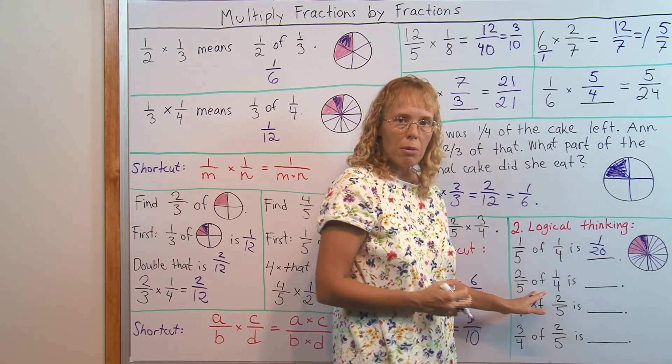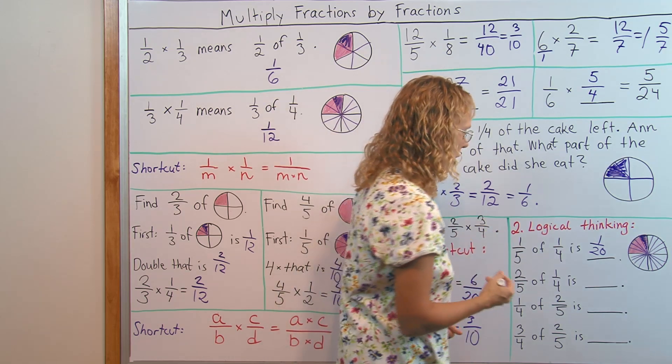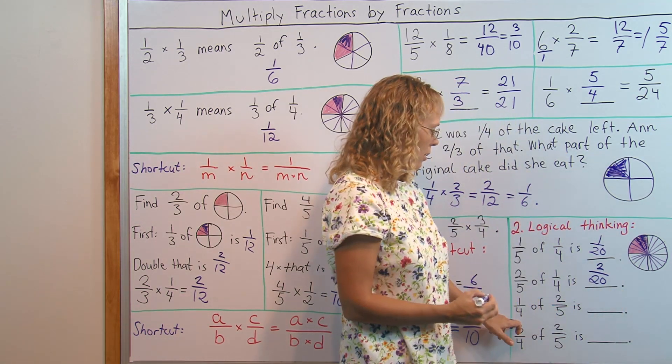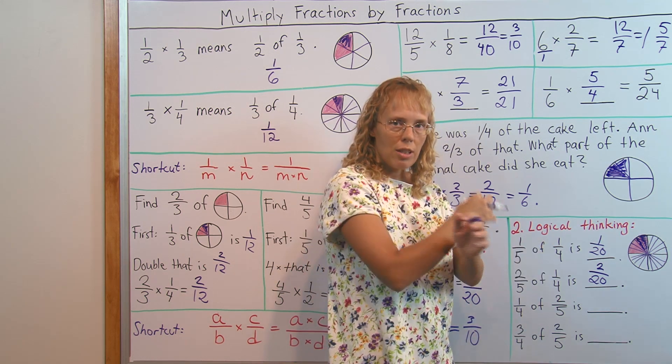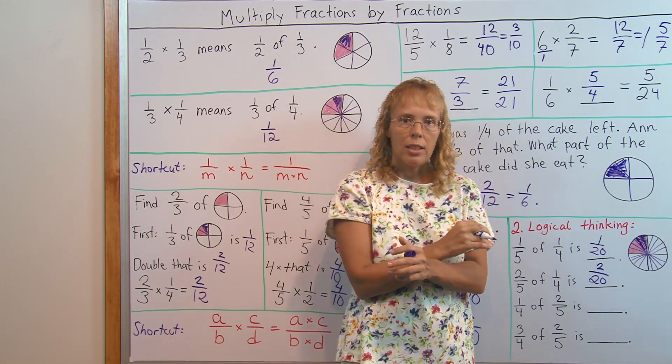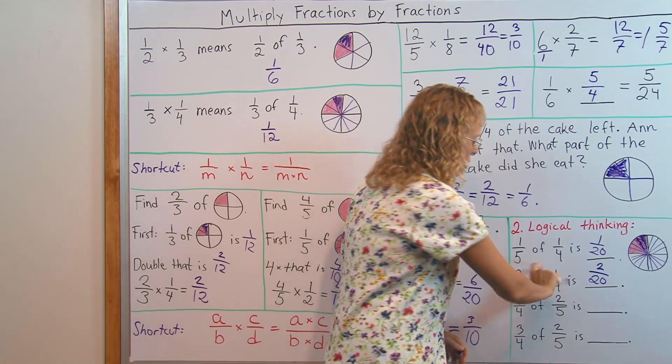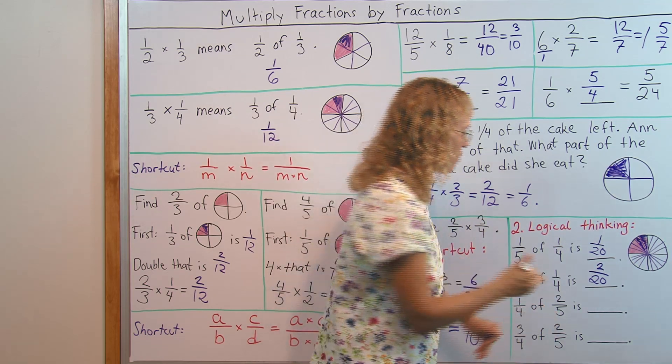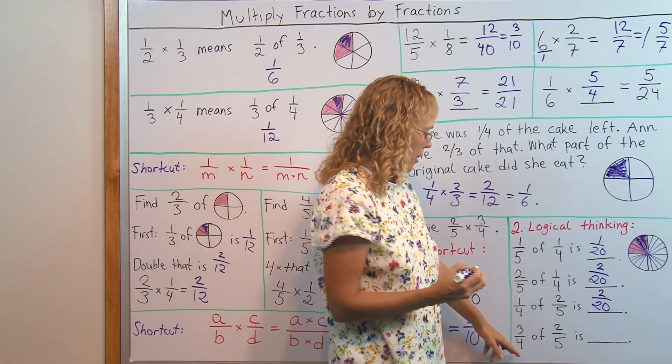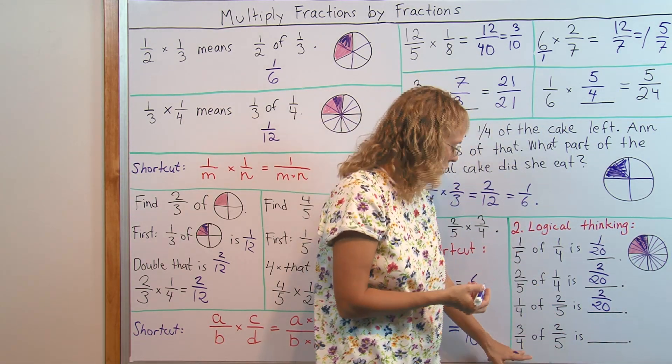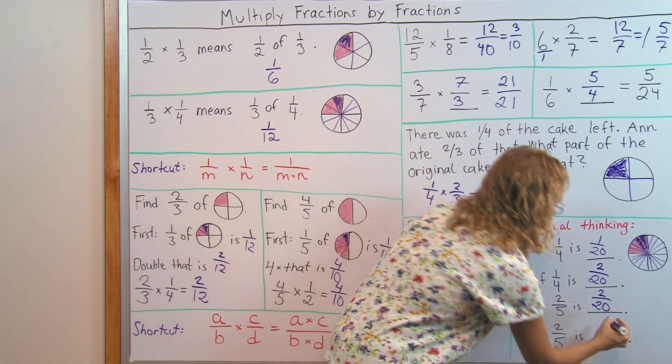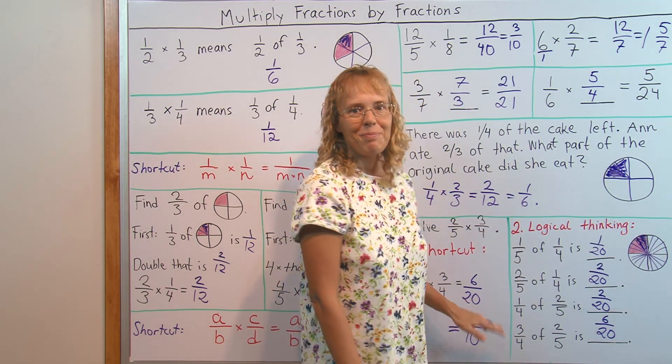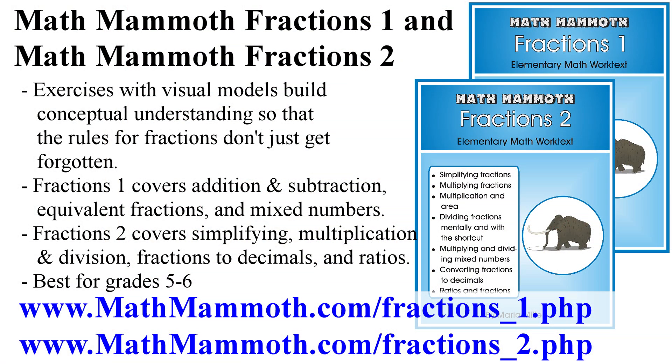Now 2 fifths of 1 fourth would be double as much. And so that means that I can switch the order of the numbers. The 'of' is basically the multiplication sign here. So 1 fourth of 2 fifths is also 2 20ths. And lastly, 3 fourths of 2 fifths will be 3 times as much as what this was, so it is 6 20ths. And there we have our answer matching the one we got from the shortcut. Thank you.